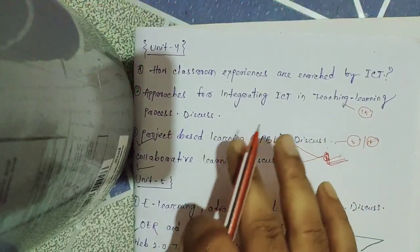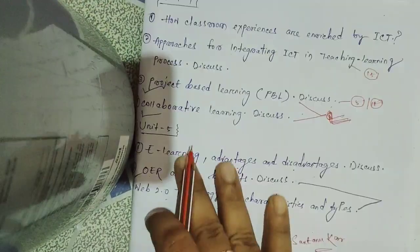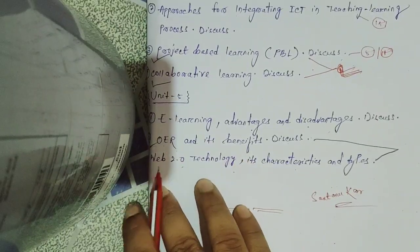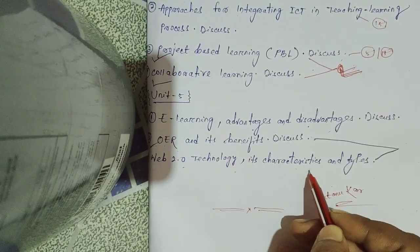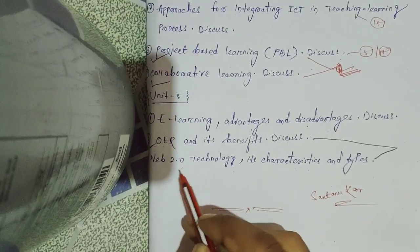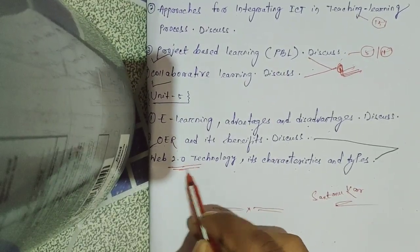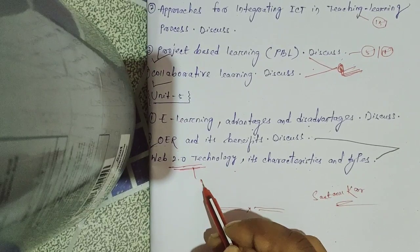Software is available. Last, Web 2.0 technology, its characteristics and types - this is a long question, will directly come as a long question in the paper.